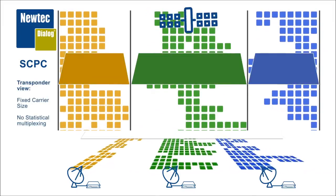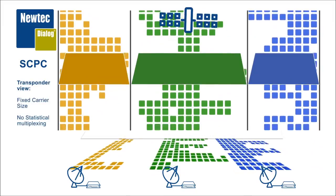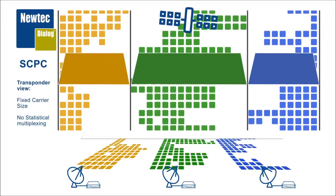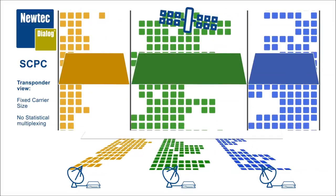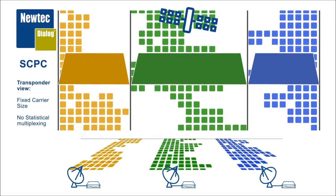Now looking at the transponder, this translates to the fact that each terminal has its own dedicated carrier and the size of that carrier is fixed. That's by the way what we know from its name: SCPC stands for single channel per carrier.